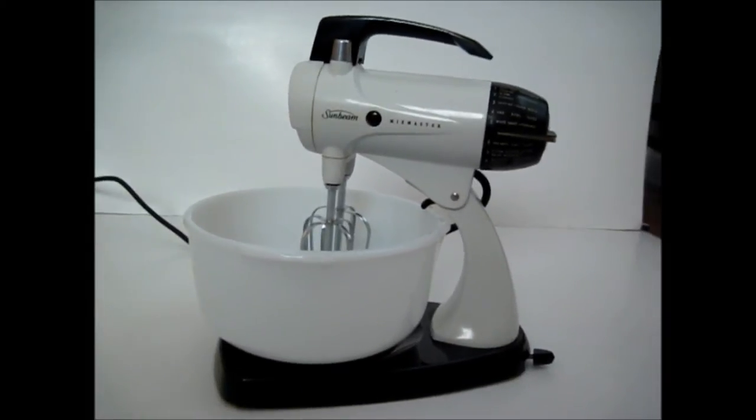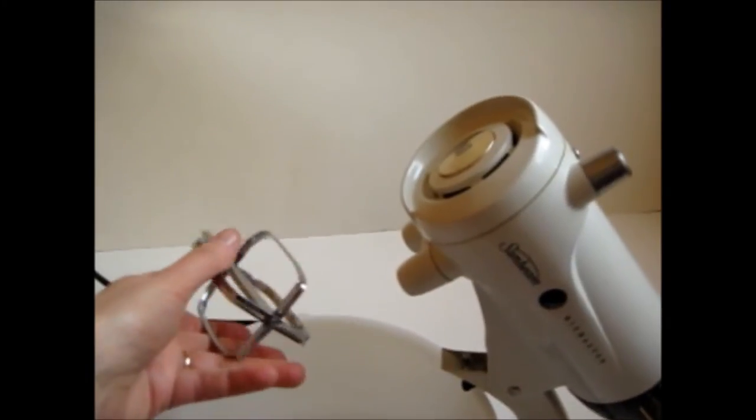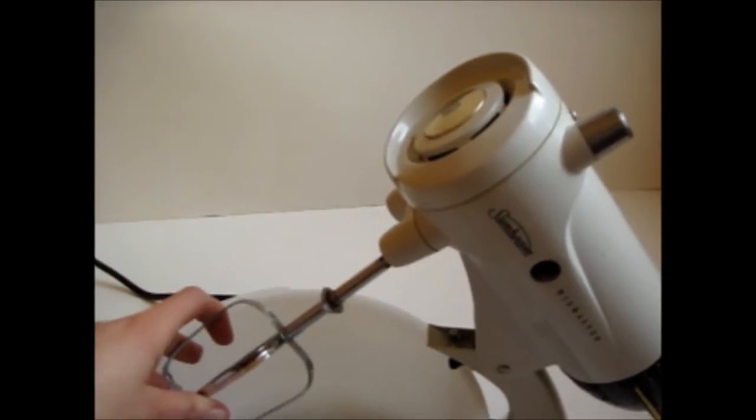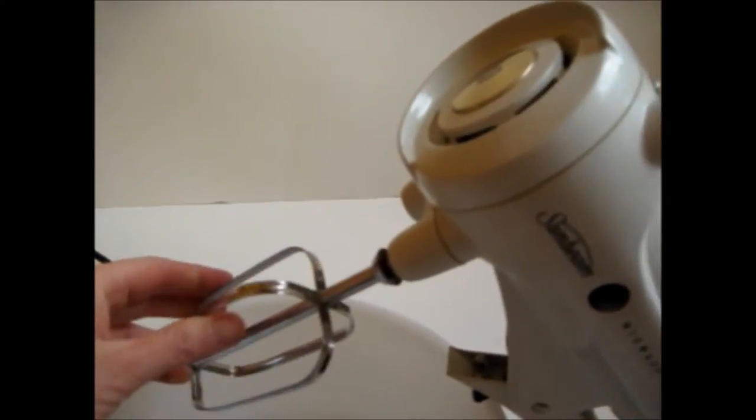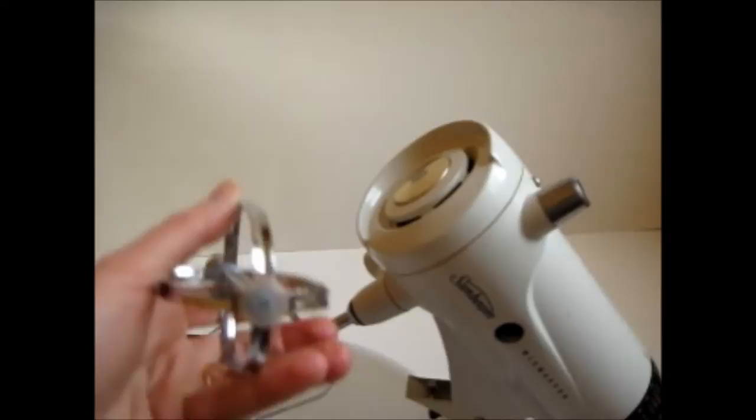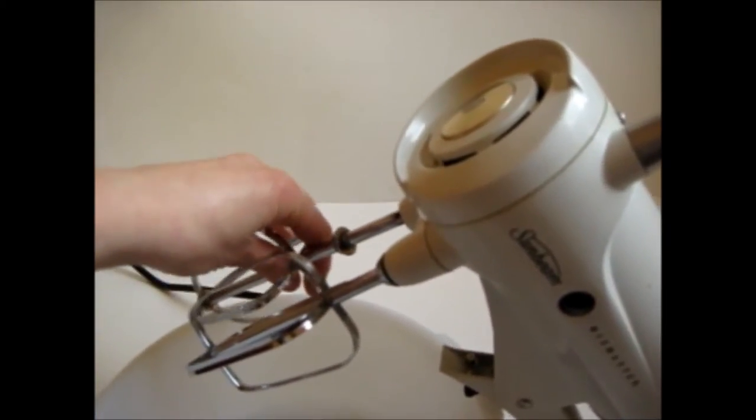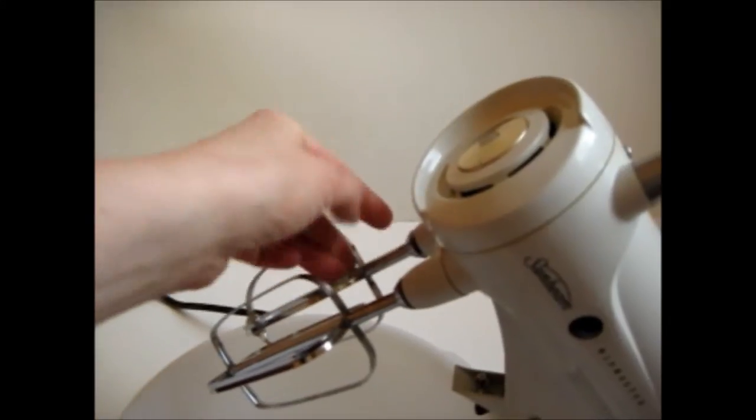This is a Model 12 Sunbeam Mix Master. Put in the beaters from the handle like this. The one with the flat bottom goes in the center. The one with the plastic button in the curve goes on the end.